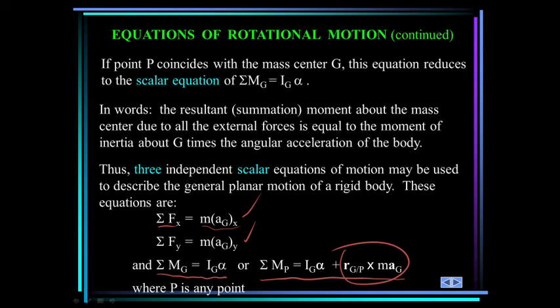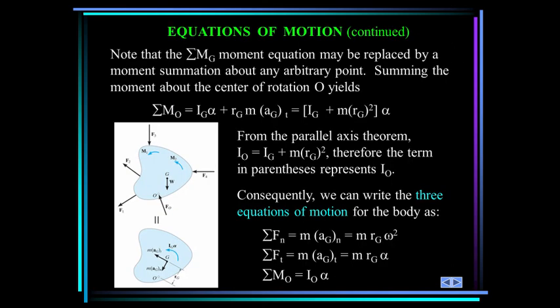And I recommend you use the vector form of these equations. It makes it so much easier. And then we talked about rotation about a fixed axis, o. And when you have that case, you can use these equations right here. You may recognize this right here. This is the normal component of the acceleration of the mass center, and this is the tangential component. And the summation of moments about o is equal to i about o times alpha.